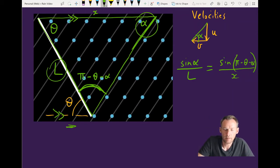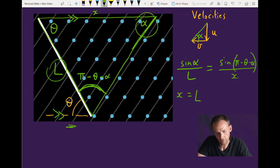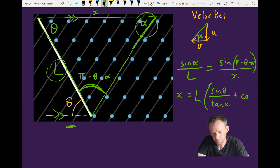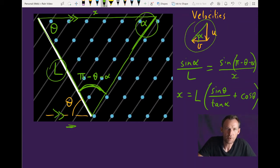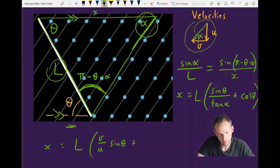If one rearranges that and uses things like addition rules for trigonometry, then we end up with something that looks like this. So I'm not going to go through all of those details right here. But this is the end result. That's our value of x. Tangent of alpha, as you can see from this top triangle, is just the ratio of u over v. And that means 1 over tangent alpha is v over u. So now I can write this as x equals L times v over u sine theta plus cosine theta.